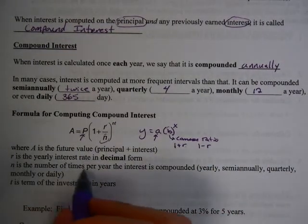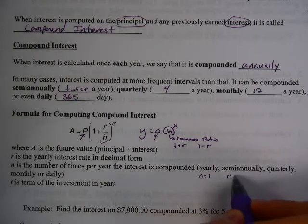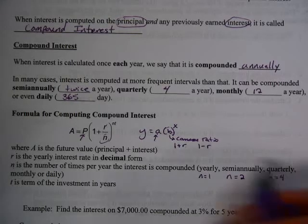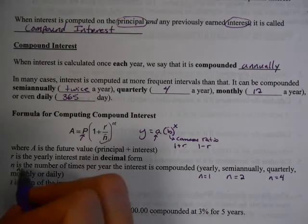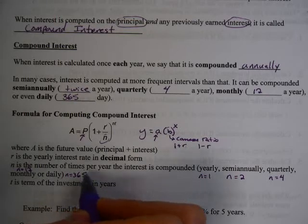Alright, so n is the number of times per year the interest is compounded. If yearly, n is 1. If semi-annually, it's 2. If quarterly, n is 4. If monthly, n would be 12. And daily, n would be 365.